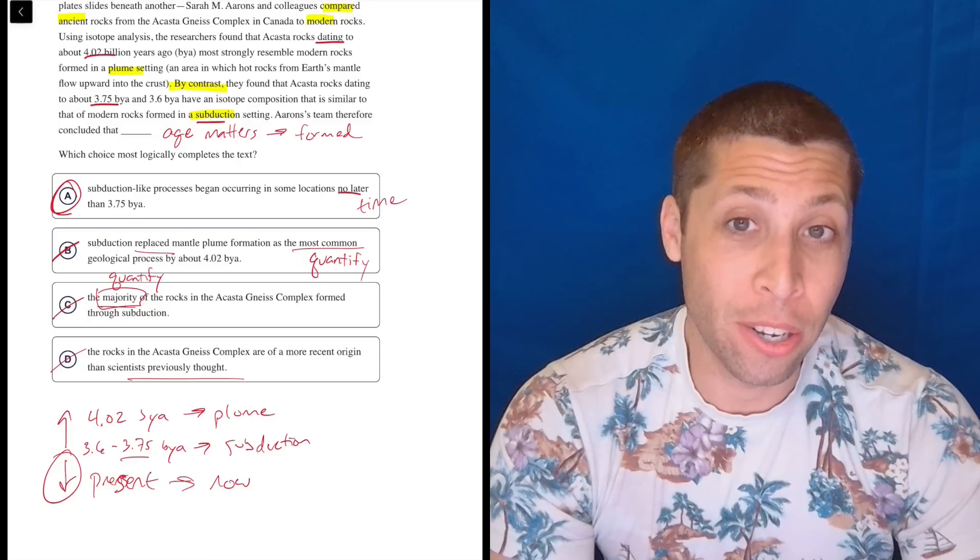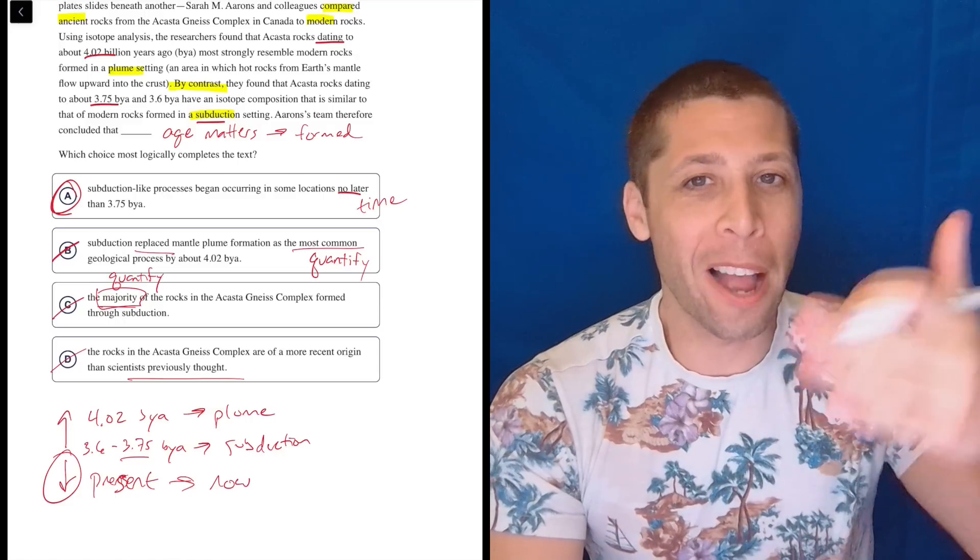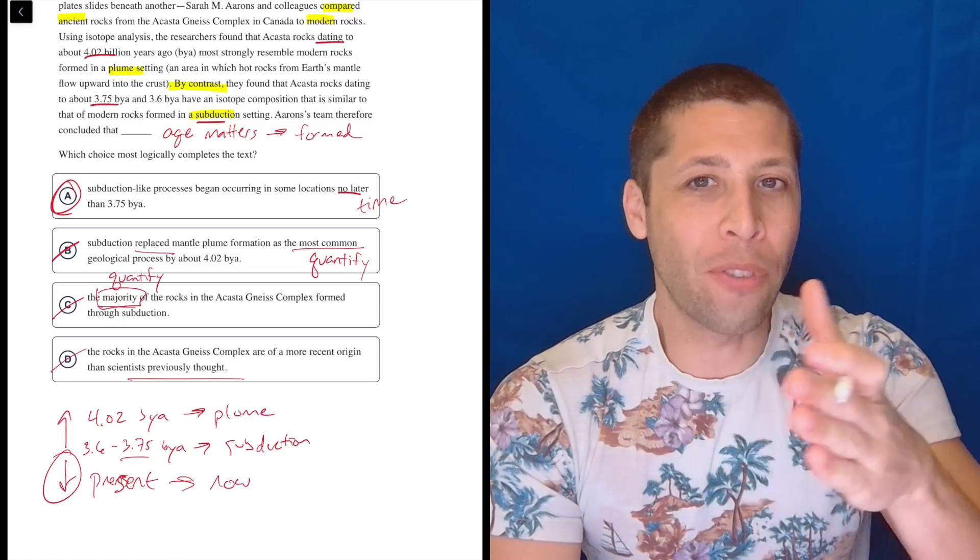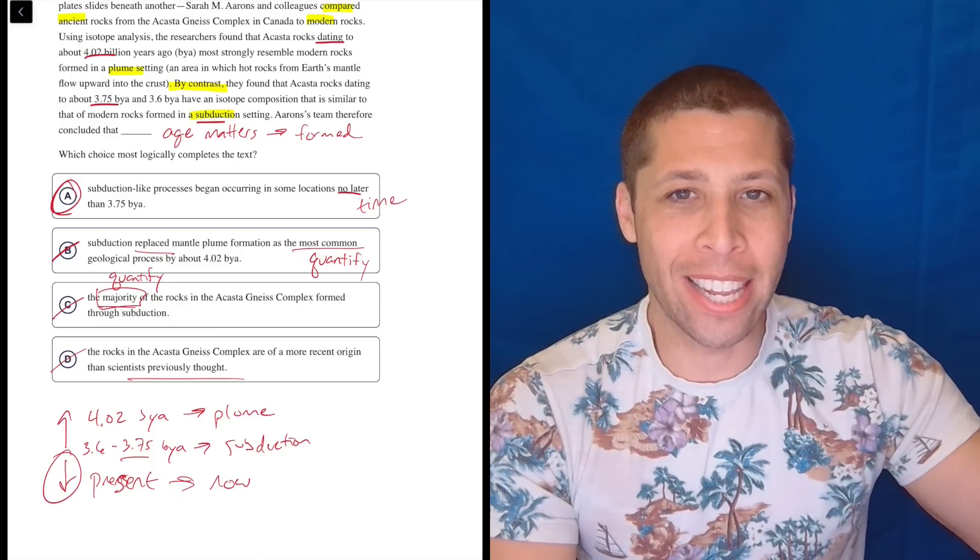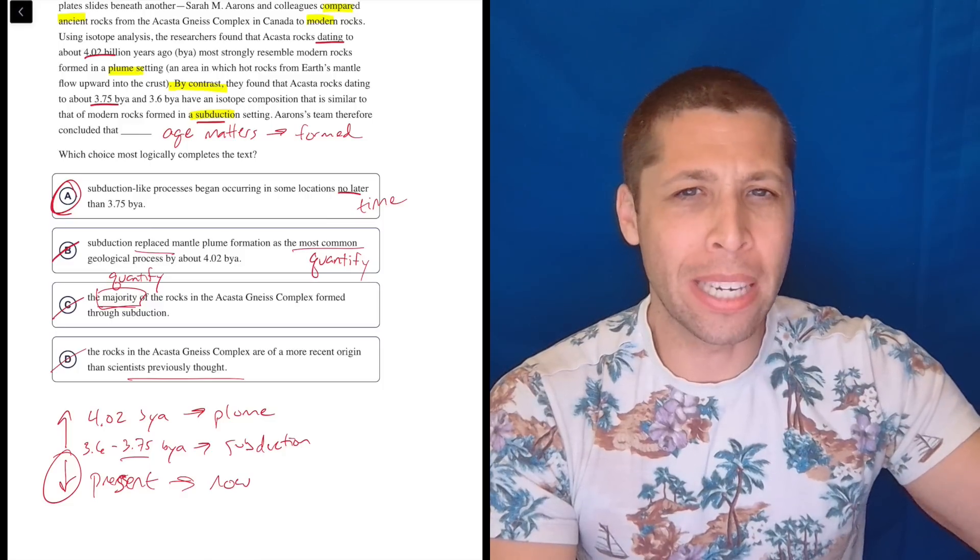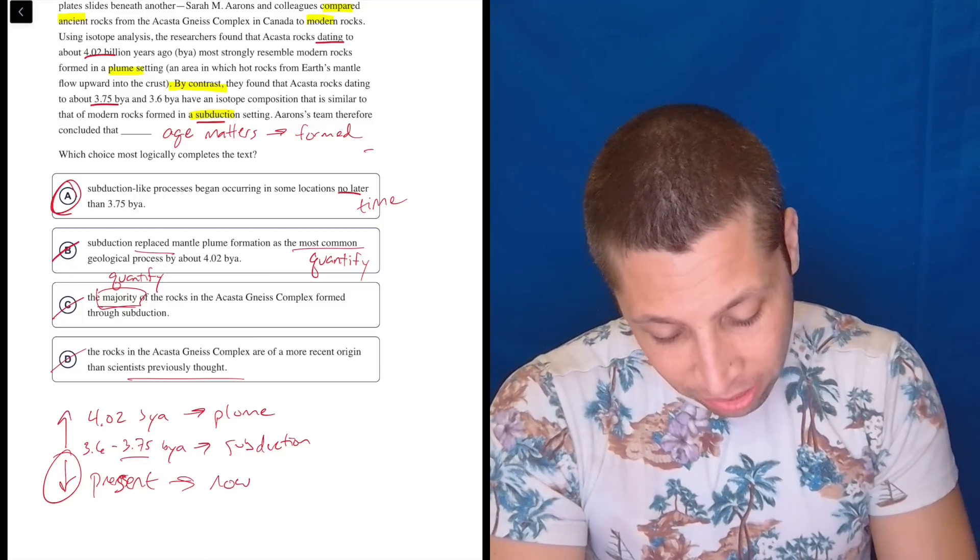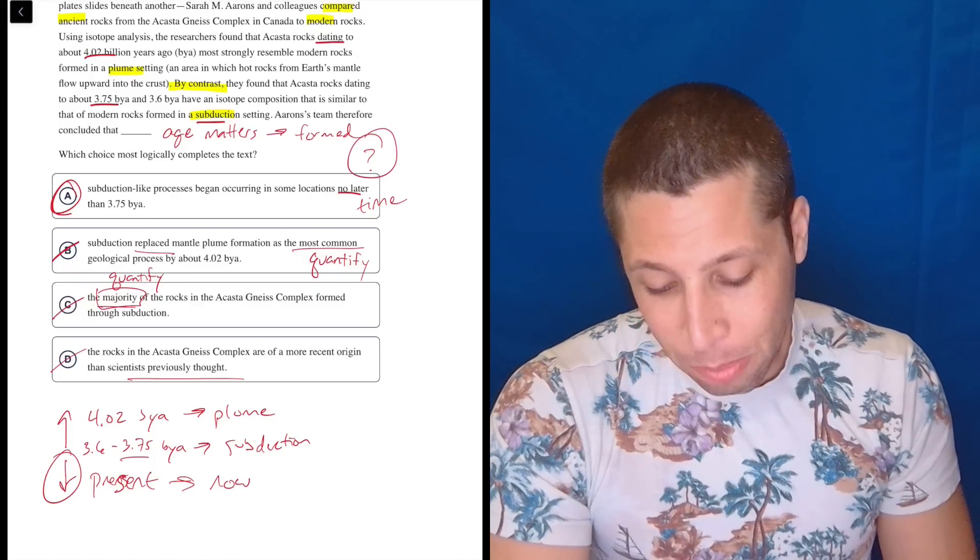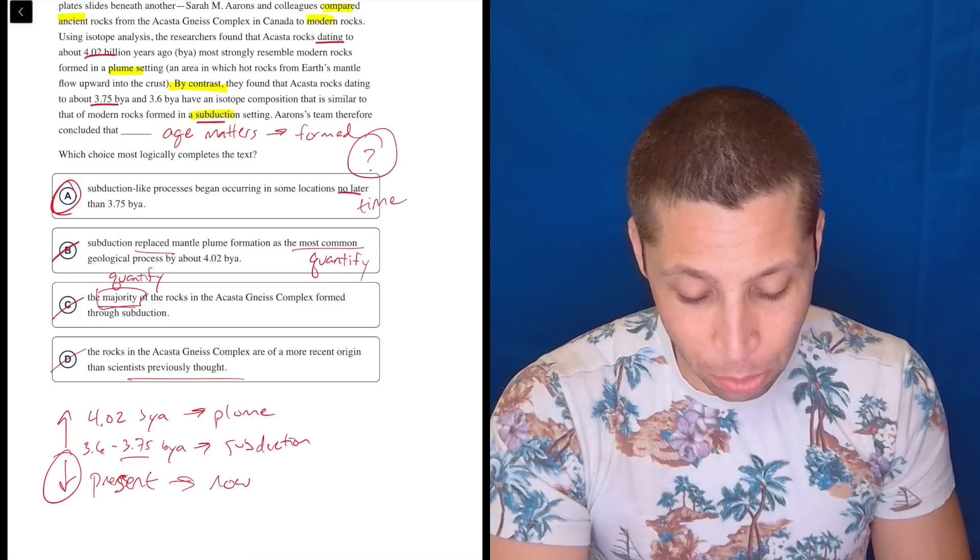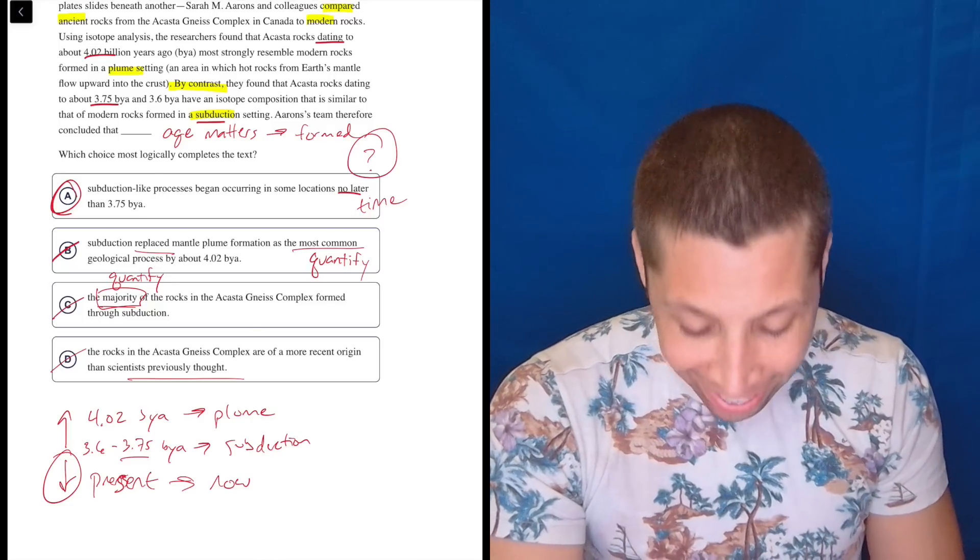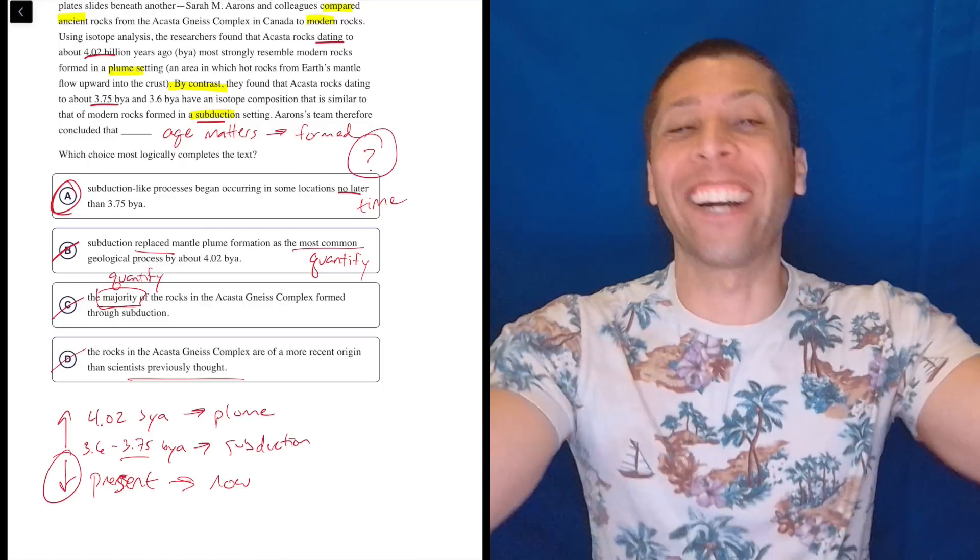I think what they mean here by no later than is that, like, if you're starting on a timeline at 4.02 billion years ago, and the first number you're going to hit kind of working your way to the present is 3.75 billion years ago. And so, they at least had to begin at that time. They might have begun later because of the 3.6? I genuinely don't know. This phrase is so confusing. No later than 3.75 billion years ago. Are they saying then that 3.8 would be bad? Or are they saying that 3.7 would be bad? Right? I think what they're saying is – I genuinely don't know. Who cares? Here's the thing. I'm done caring. I'm going to move on to another question.